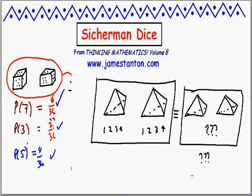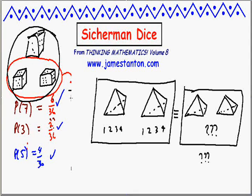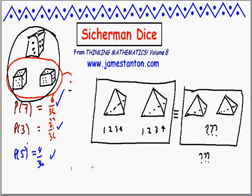Anyhow — Sicherman dice. There's also a third challenge: what if you roll three dice? Can you come up with a triple of Sicherman dice that behave the same way as a triple of ordinary dice? There it is — Sicherman dice. You've got to love them. I love the fact that it was a colonel, Colonel George Sicherman, who was playing around with mathematics just for fun, and came up with this wonderful set of dice. Absolutely brilliant. Thank you.